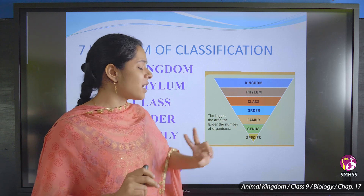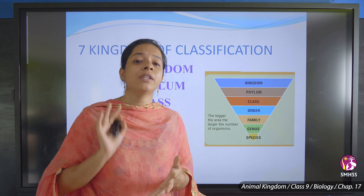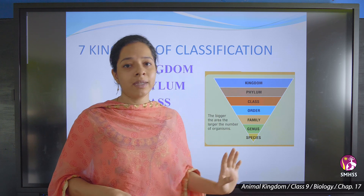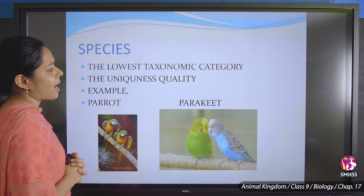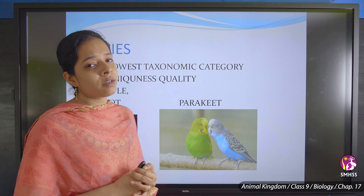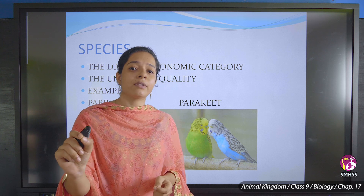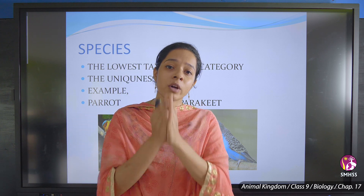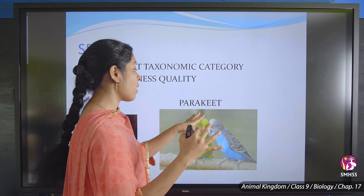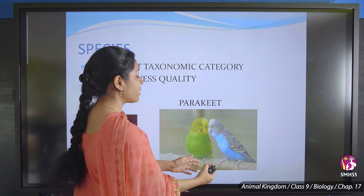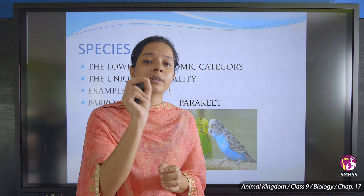Let us start from species, which is the smallest category of organism. Species is the lowest taxonomy category, classified based on uniqueness. For example, if you take a parrot and a parakeet — the parakeet is a lovebird — they come from different origins and cannot interbreed. That is species.